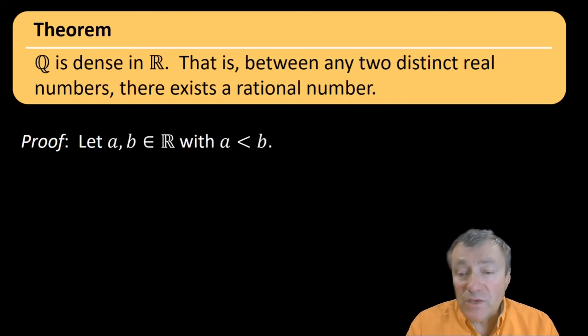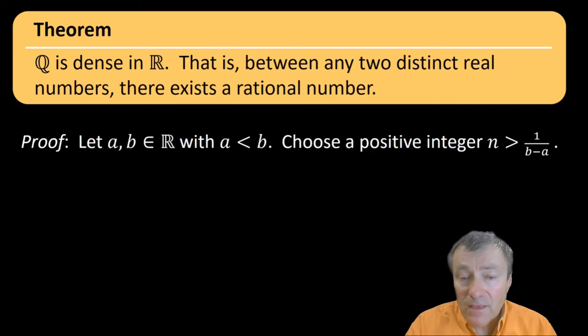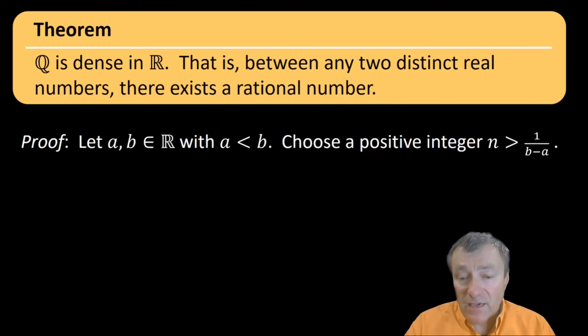To prove this, pick any two real numbers a and b with a less than b. Our job is to find a rational number in between a and b. By the Archimedean property, we can get a positive integer n bigger than one over b minus a. Also, there exist integers bigger than n times a, also by the Archimedean property.